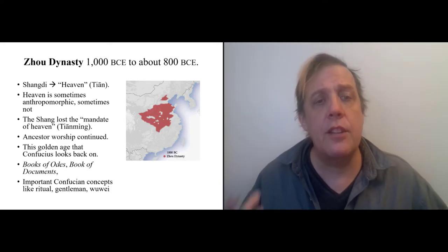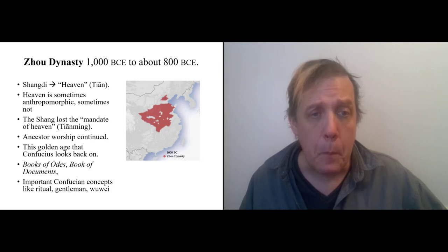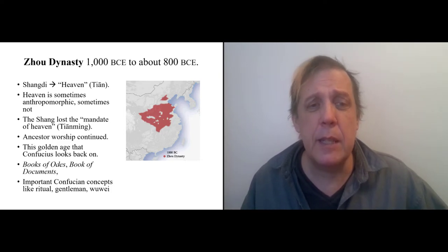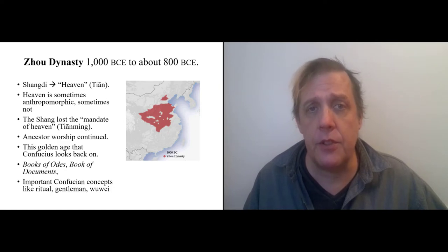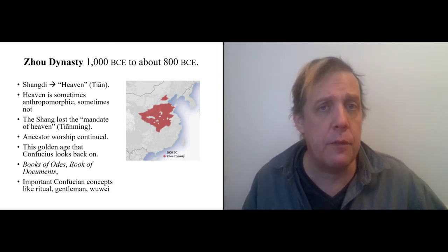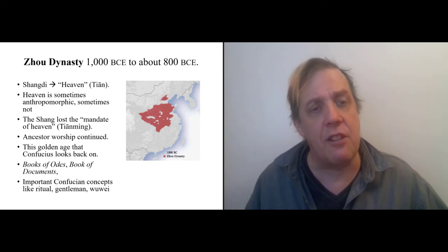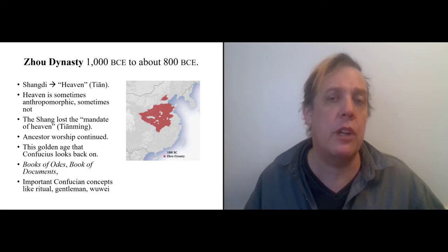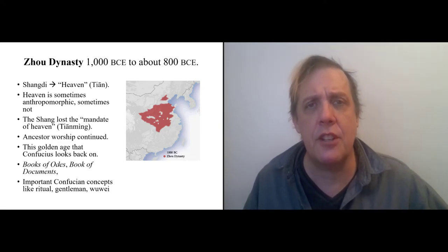And so the Shang were said to lose power to the Zhou because they lost the mandate of heaven. Under the Zhou, ancestor worship continued, and this was again the golden age that Confucius looks back on. A lot of important books were written at the time. So Confucius feels that the study of literature is vital for a noble person.